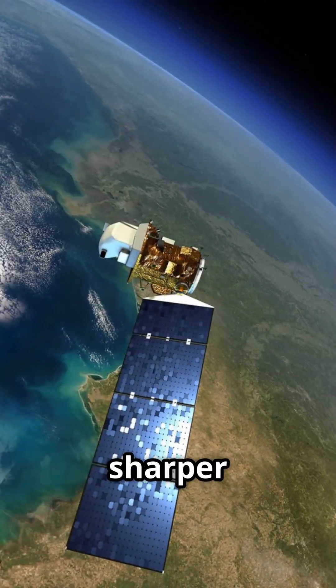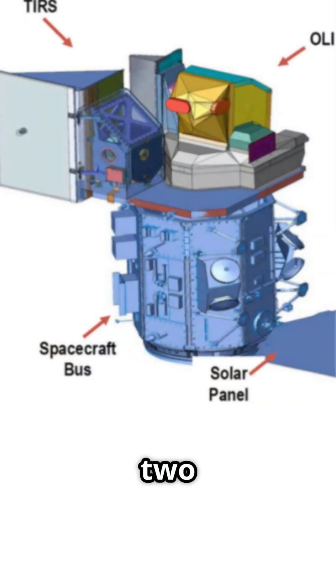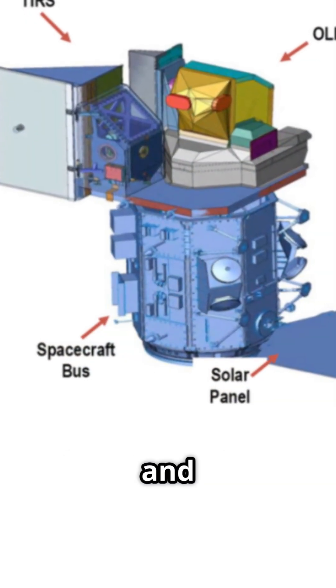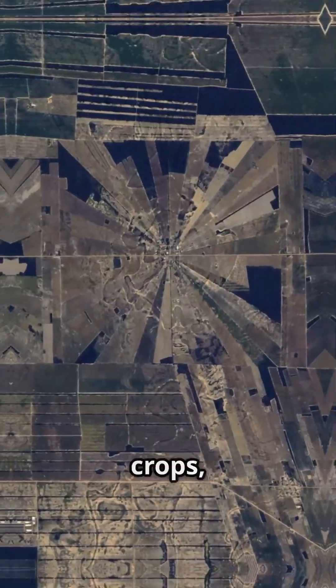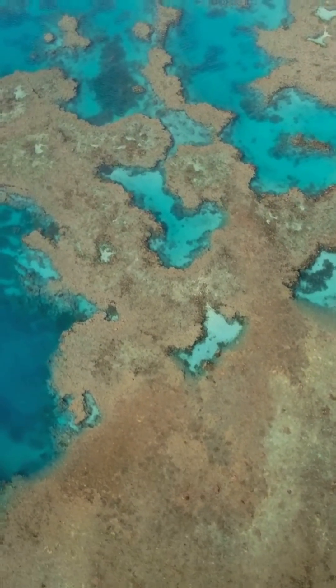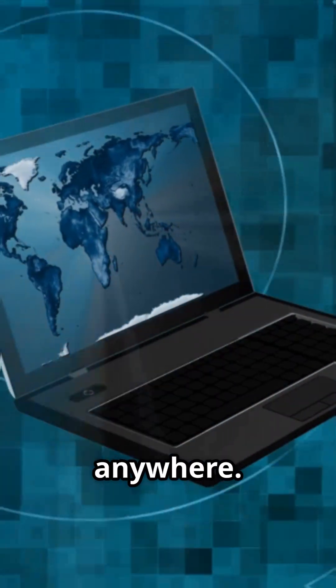Then came Landsat 8 in 2013, packing sharper eyes and broader vision with two powerful instruments, OLI and TIRS. This satellite spots shrinking glaciers, thirsty crops, and even sick coral reefs. And its data? Totally free for anyone, anywhere.